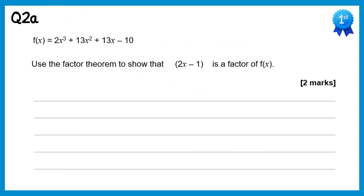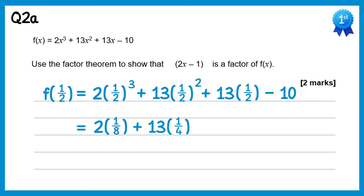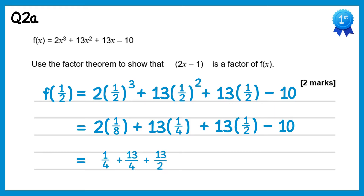For this question we need to show that 2x minus 1 is a factor. To do this we'll do f of one half. So we need to do 2 lots of one half cubed plus 13 lots of one half squared plus 13 lots of one half take away 10. Now one half cubed is one eighth, so we've got 2 lots of one eighth. One half squared is a quarter, so we've got 13 lots of one quarter, then 13 lots of one half, then take away 10. 2 times one eighth is 2 eighths which simplifies to one quarter, then 13 quarters, 13 halves, take away 10. Writing all of these over 4, the 13 halves become 26 over 4 and negative 10 becomes negative 40 over 4. It should become clear that this equals 0, so we've finished.